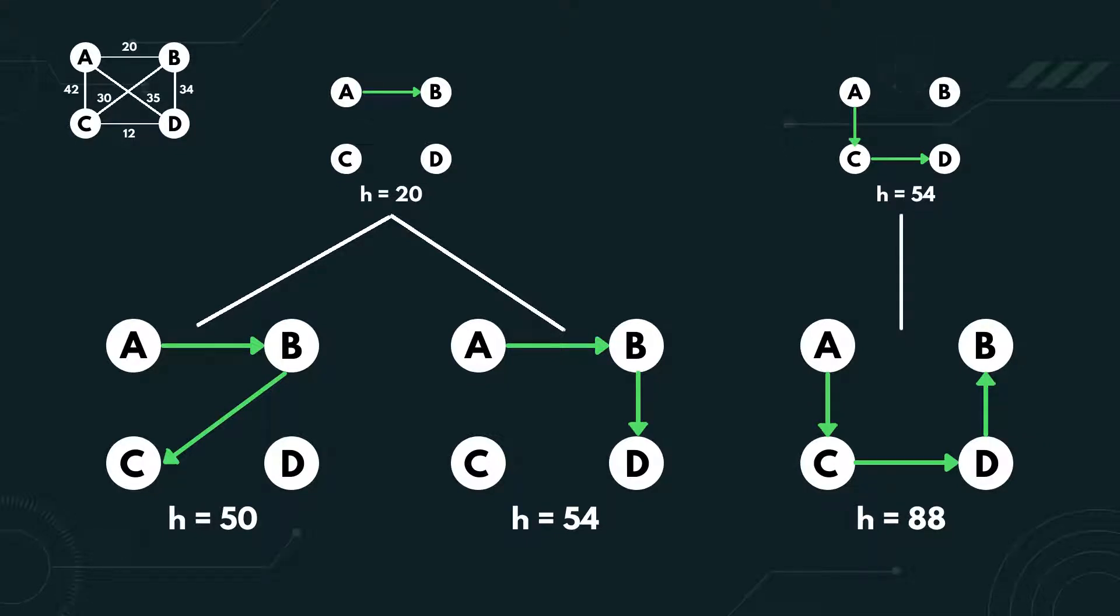For the second one, there's only one successor, which is A, C, D, B with heuristic value 88. We cannot do A, C, D, A because it needs to get to B first before going back to A.